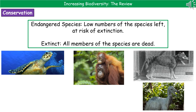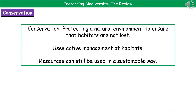And again, two examples on the right hand side there. At the top, we have an organism called the thylacine and at the bottom we have the dodo. So the way in which we actually go about trying to increase biodiversity is through this process of conservation.